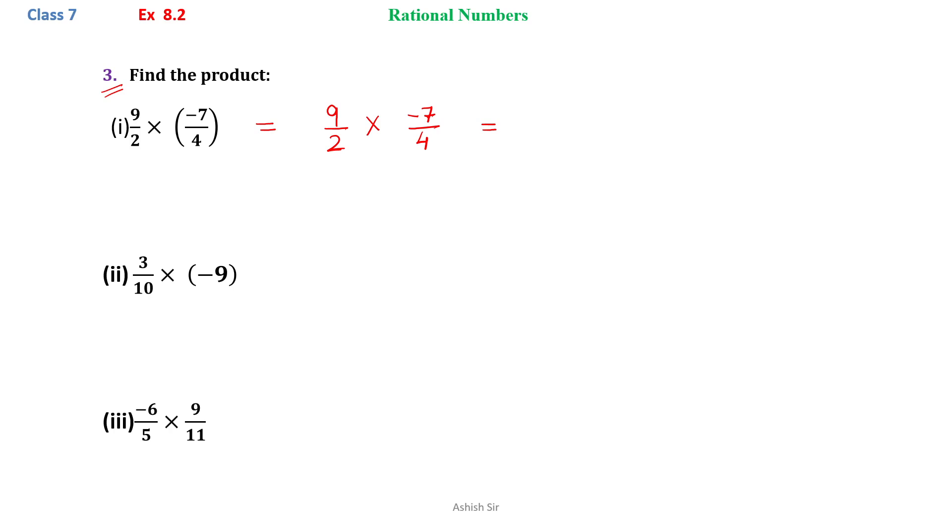So what we have to do is we just need to multiply numerators with numerator and denominators with denominator. So 7 nines are 63 and 4 twos are 8, so our answer is minus 63 by 8.